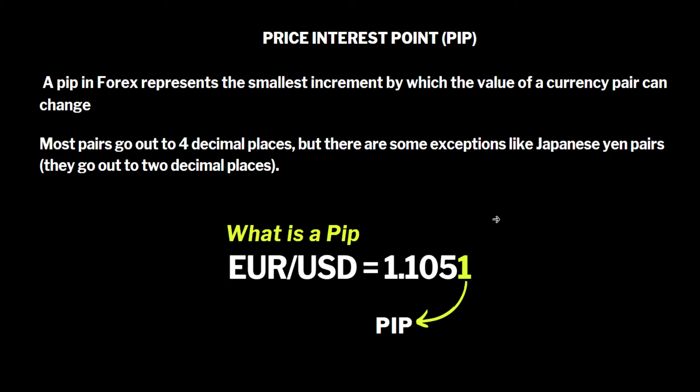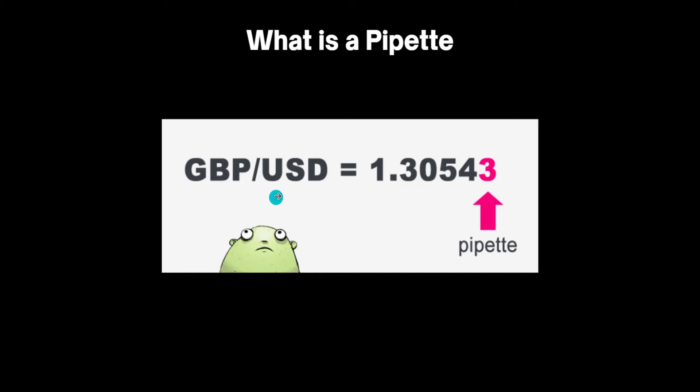If you look at your MetaTrader 4, MetaTrader 5, or TradingView depending on your platform, you will see some brokers give you up to five decimal places. For example, GBP/USD shows as 1.30542 — the last digit is known as a pipette. It is simply a fraction of a pip; we don't consider it because it is very infinitesimal. When we measure a pip we only consider the fourth digit as our pip.